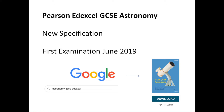It's a new specification. The first exam was in June 2019, which at the time of doing this was last year. You can download the specification for yourself and have a closer look — just Google 'astronomy GCSE Edexcel' and you'll find a download for the specification and some other resources.